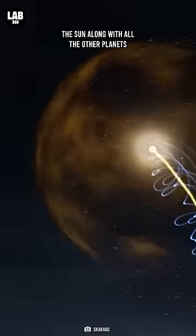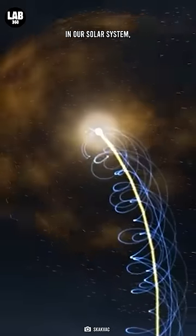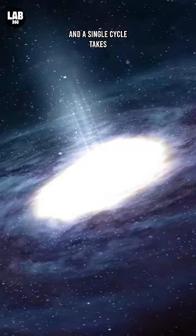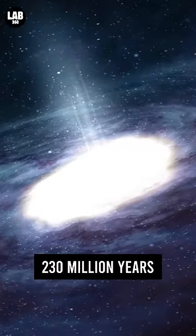The Sun, along with all the other planets in our solar system, revolves around the Milky Way galaxy. And a single cycle takes about 230 million years to make.